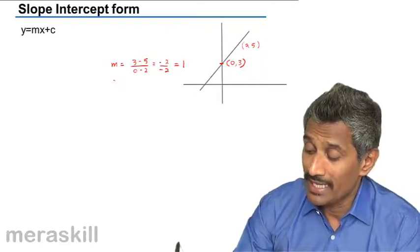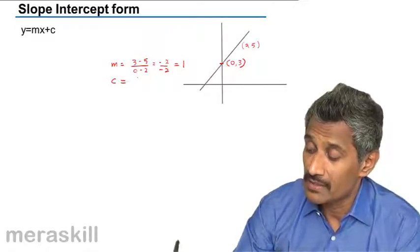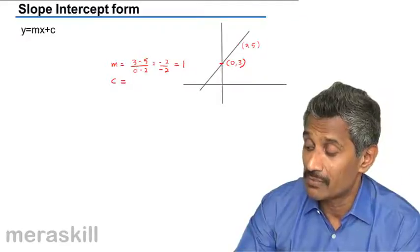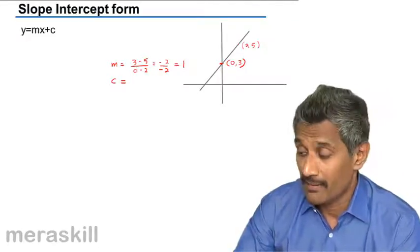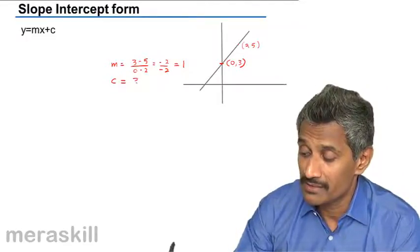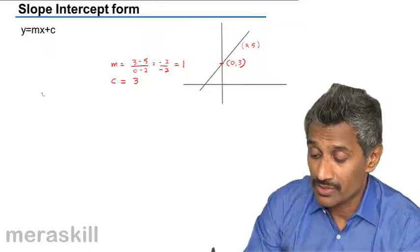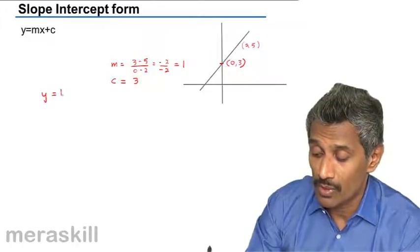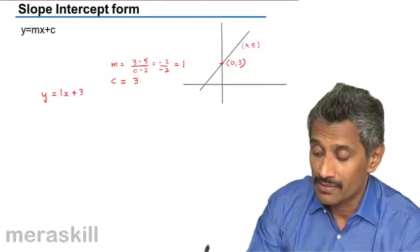And the y-intercept c is nothing but 3, because we have to be starting the y-axis at (0,3). Y-intercept is 3. So the equation is going to be y is equal to 1x plus 3, or y is equal to x plus 3.